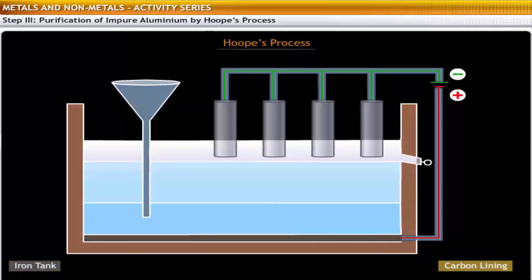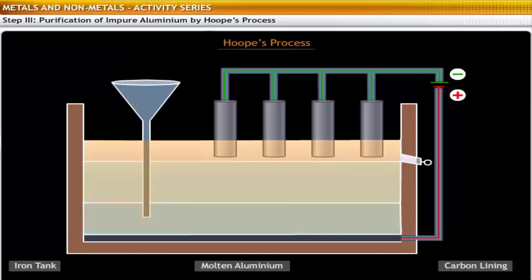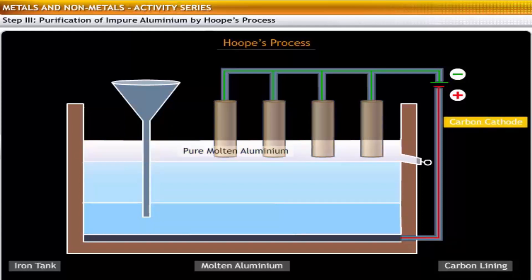Three layers of molten aluminium with different densities are maintained to prevent their mixing. The upper layer of the electrolytic cell consists of pure molten aluminium with a series of carbon rods that serve as the cathode.